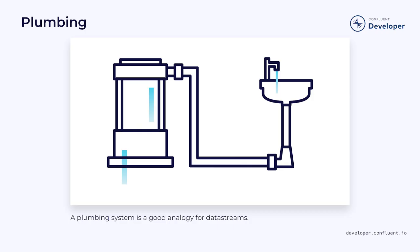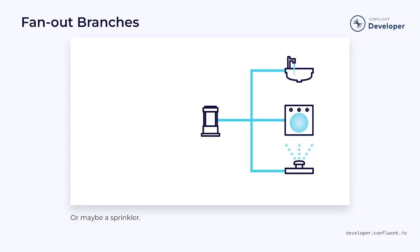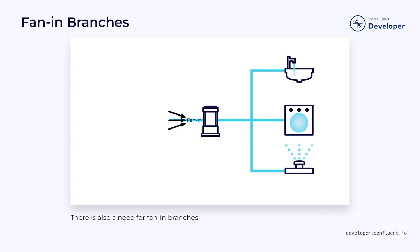We've been comparing our data streams to plumbing systems to better understand how they work. If you break down a modern plumbing system, you'll see that there are often many branches in the pipes. The incoming pipes might have branches for a variety of needs including sinks, washing machines, sprinklers, and more. Here, we are picturing a fan-out branch — essentially, a single pipe fans out to multiple pipes.